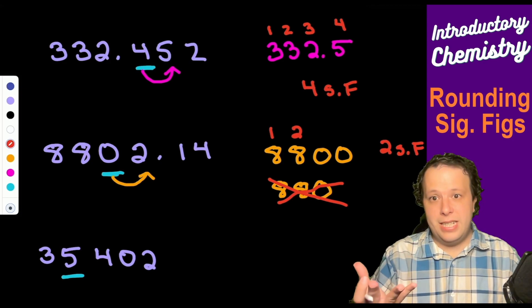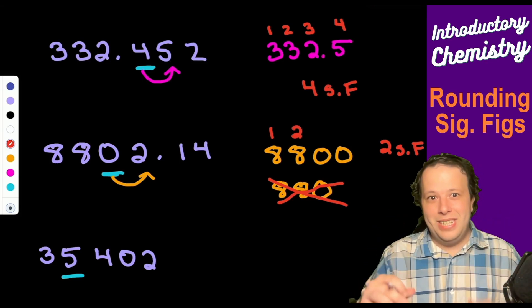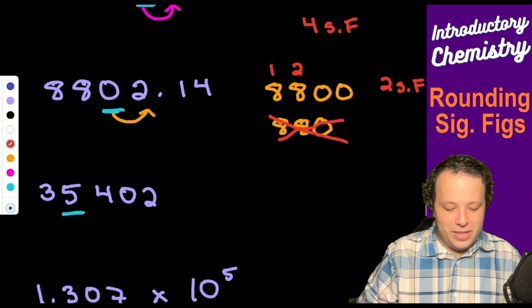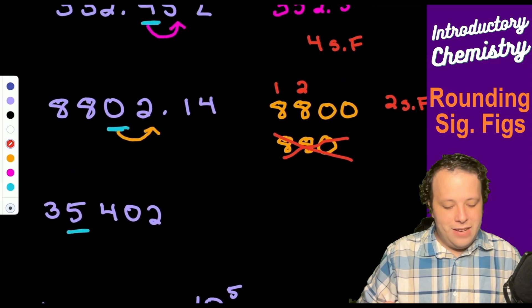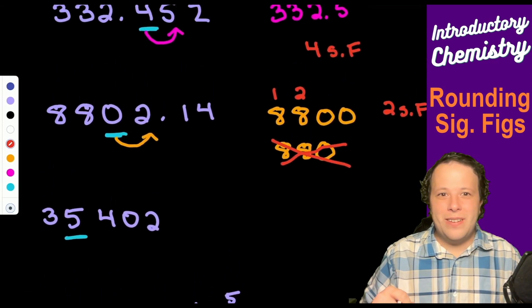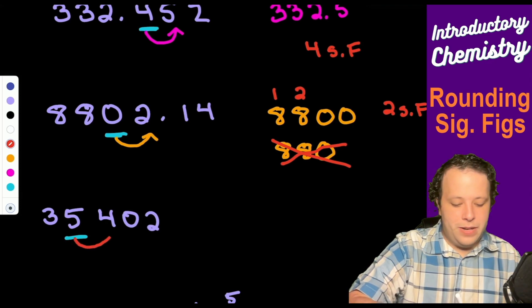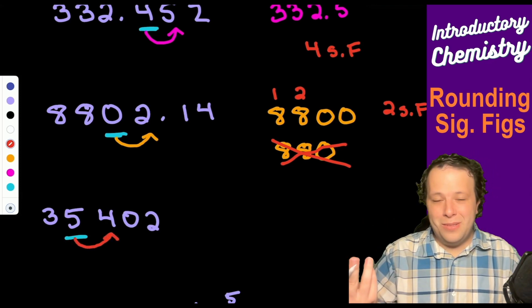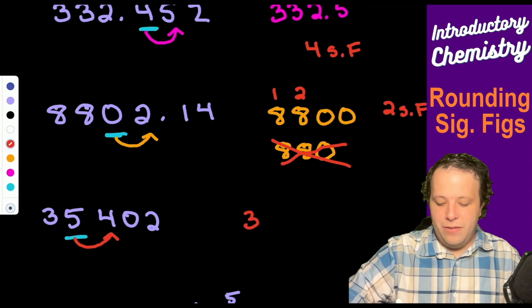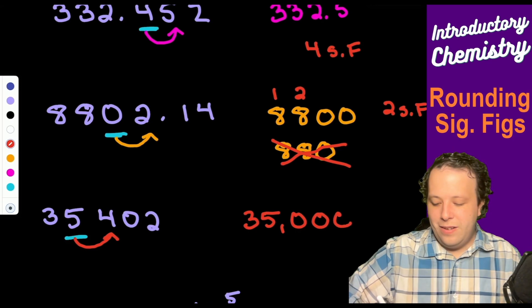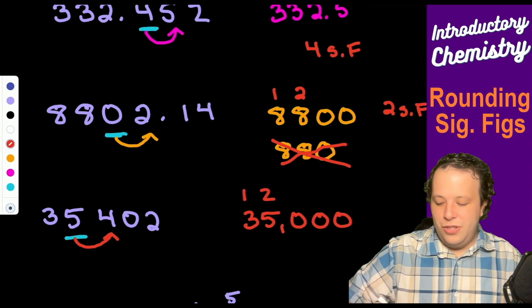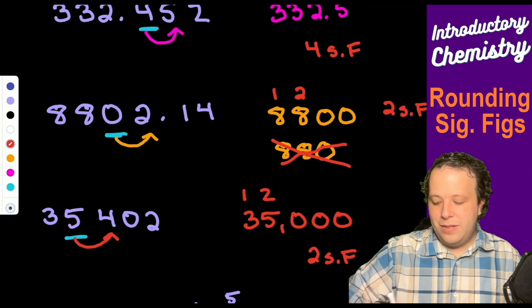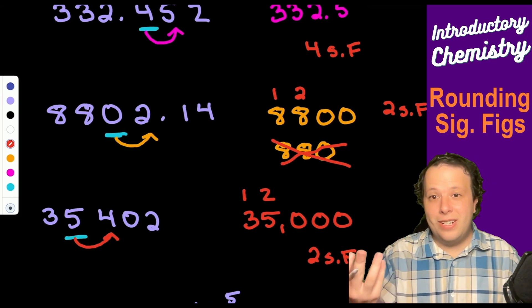The next one, I have 35,402. Same idea - we have five and we're going to be rounding down, so we're going to have 35,400 as our answer here. We only have two significant figures because the trailing zeros are not significant.